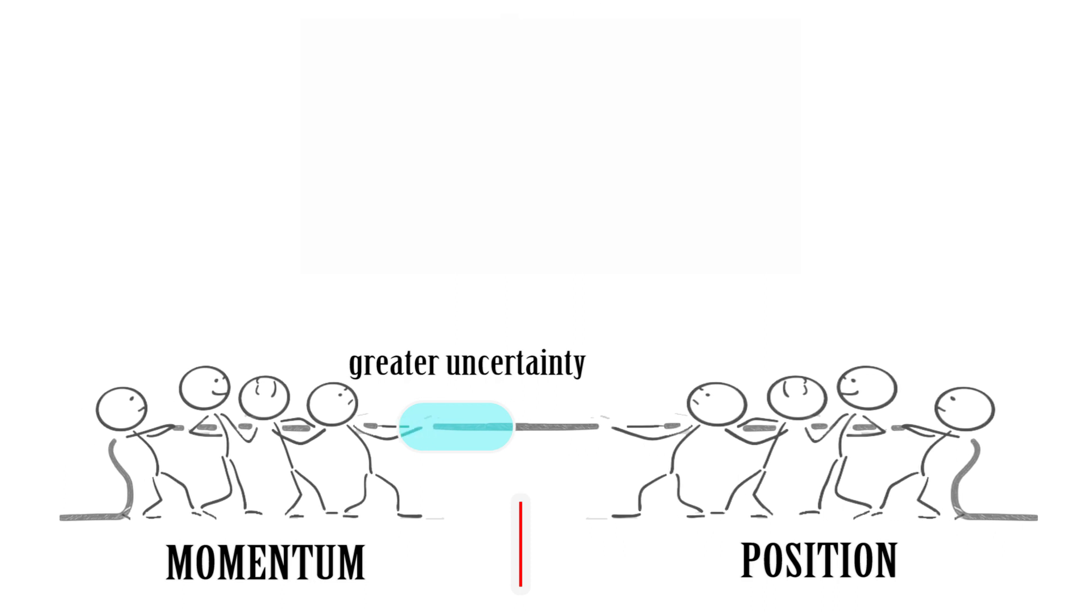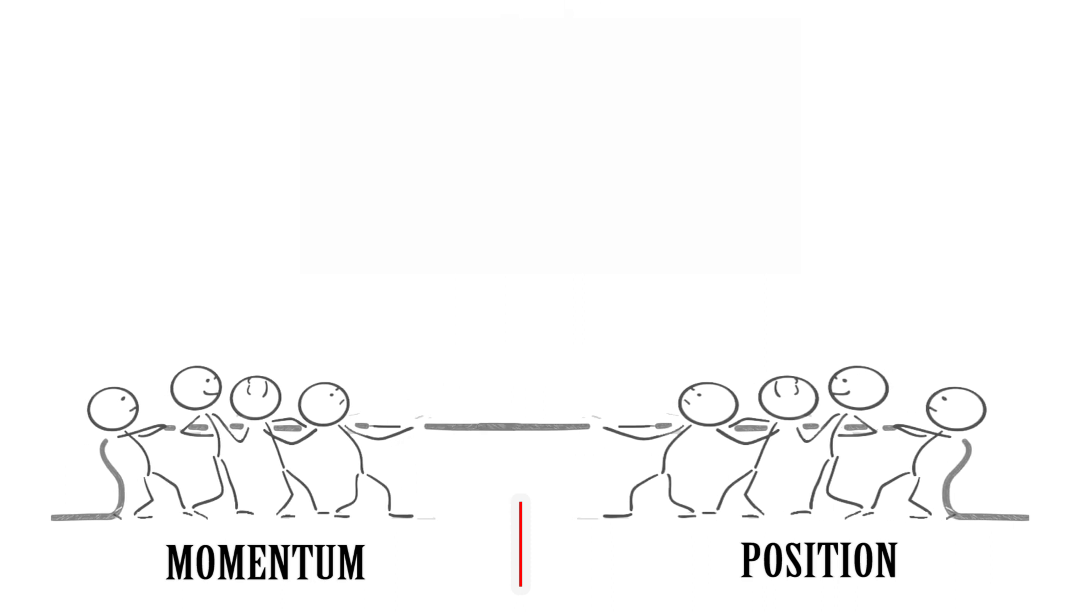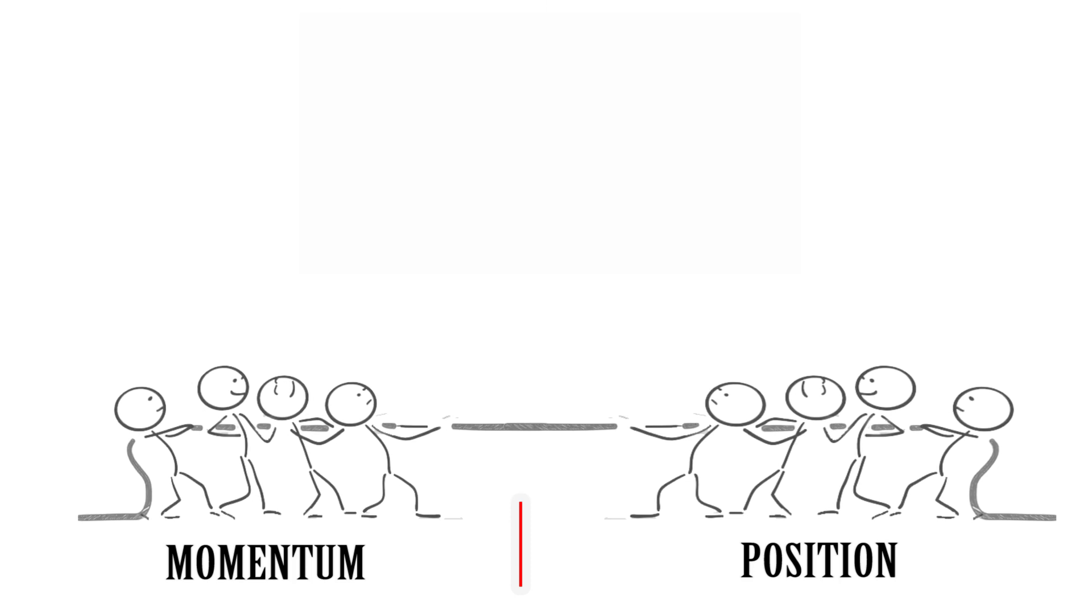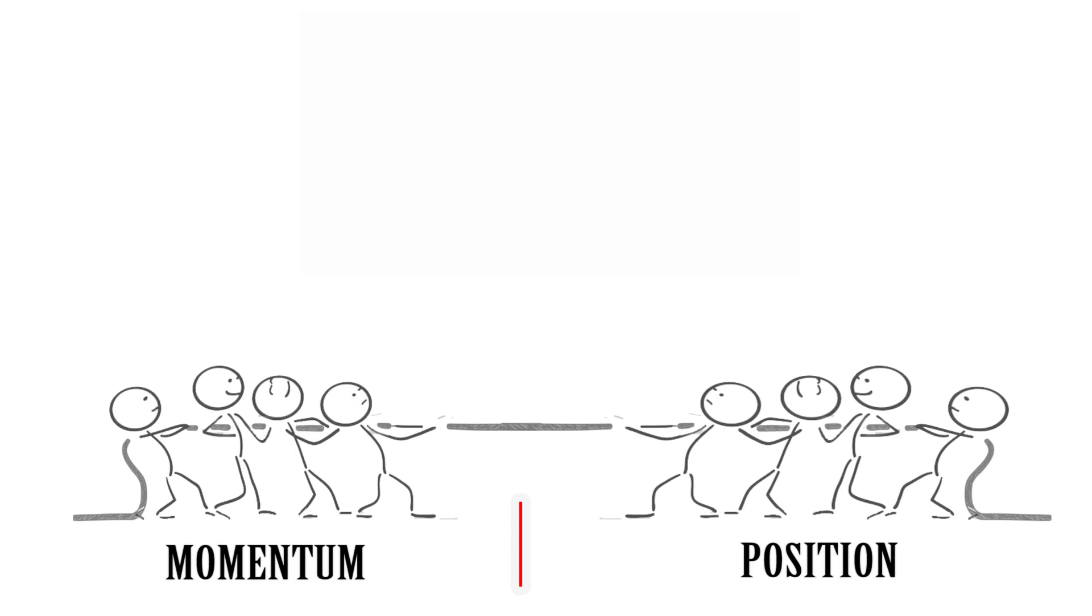So, therefore, if uncertainty in momentum decreases, then uncertainty in position must decrease, a typical tug-of-war situation.